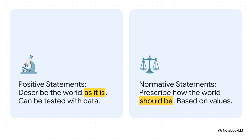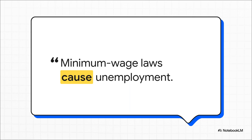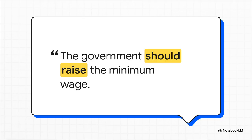A positive statement is all about description — it's a claim about how the world is, and it can be tested with data. A normative statement, on the other hand, is prescriptive — it's a claim about how the world should be, and it's always based on values and opinions. For example: 'Minimum wage laws cause unemployment.' Whether you think this is true or false doesn't matter — what matters is that we can test it, gather the data, and run the numbers. That makes it a positive statement. Now compare that to: 'The government should raise the minimum wage.' See that word 'should'? That's a dead giveaway. This isn't a statement of fact we can test — it's a statement of values, a policy prescription. It is a classic normative statement.